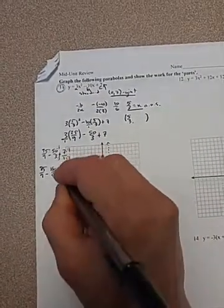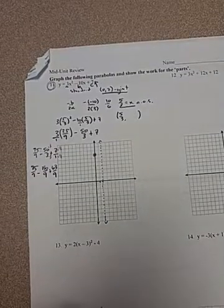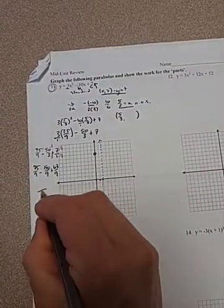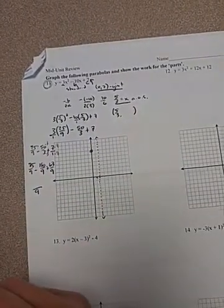Now that I have common denominators, I know that my answer is going to be something over 9. So 75 minus 150 is negative 75. And then plus 63 is going to be negative 12 over 9, which will reduce.